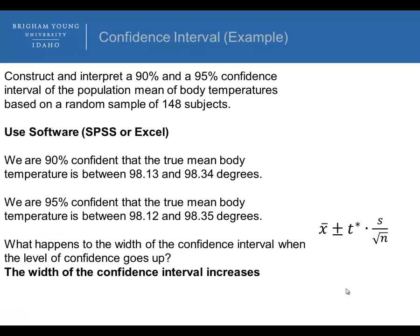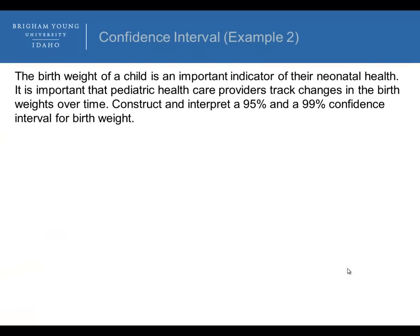Now what I'd like to do is I'd like to go through a second example. So with the birth weight data from Australia, the birth weight of a child is an important indicator of the neonatal health. It's important that pediatric healthcare providers track changes in the birth weight over time. Construct and interpret a 95 and a 99% confidence interval for the birth weight. So if you'd like to, you can pull up, there's a link to the birth weight data. You saw that in part one. You can use that again and construct the confidence intervals.